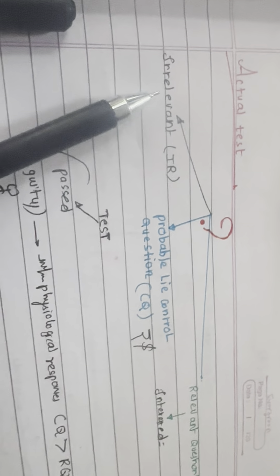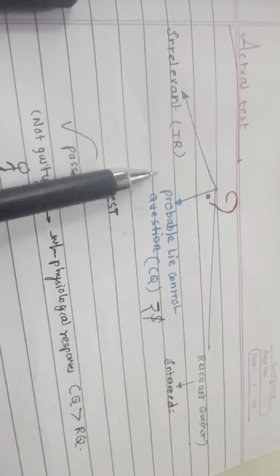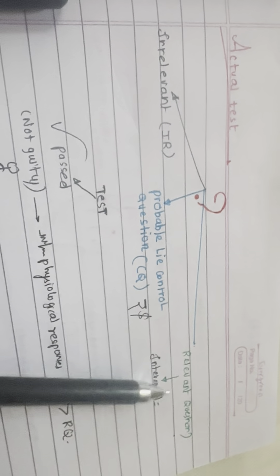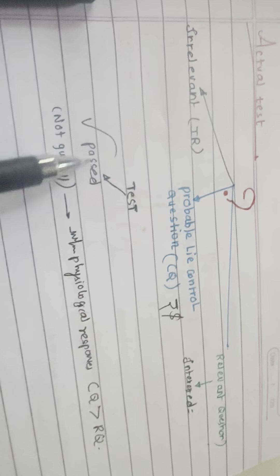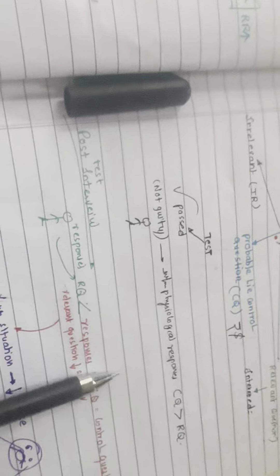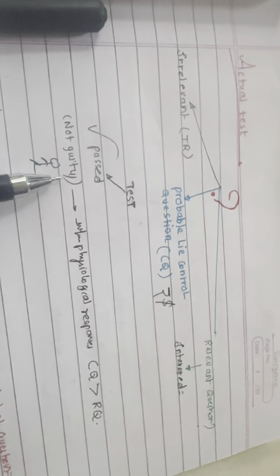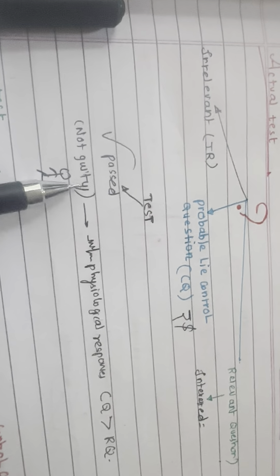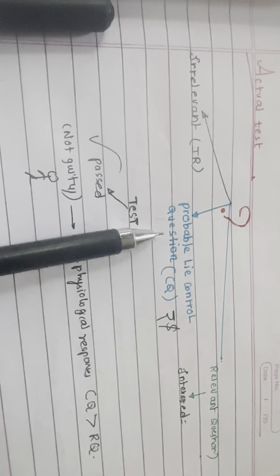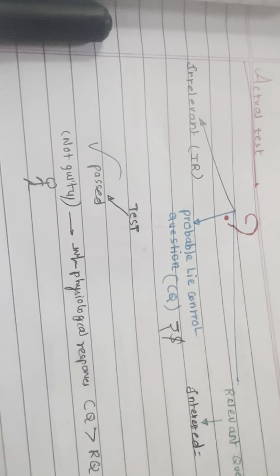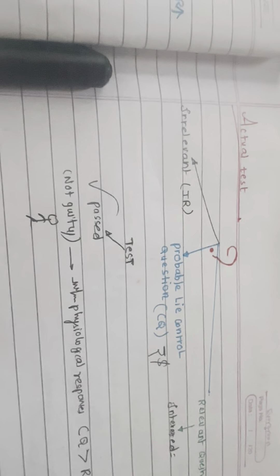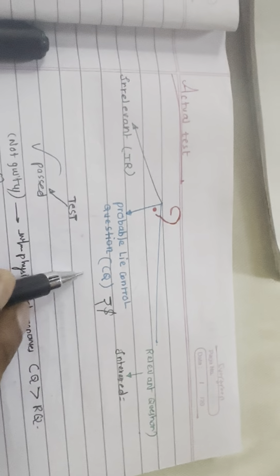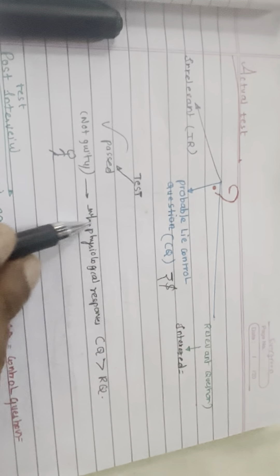The actual test questions are of three types: irrelevant questions (like asking your name), probable lie controlled questions (CQ) — questions that most people will lie about, such as 'Have you ever stolen money?' — and relevant questions (RQ), which are the questions the tester is really interested in.